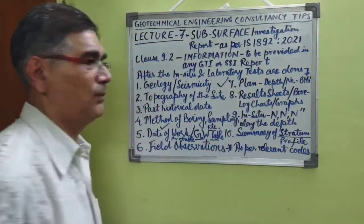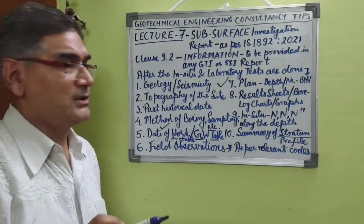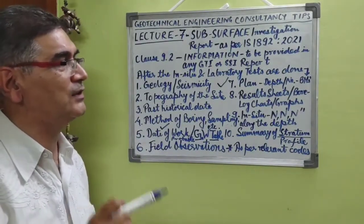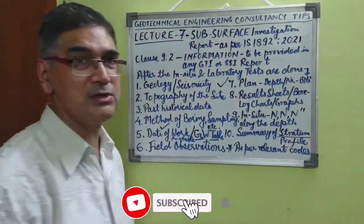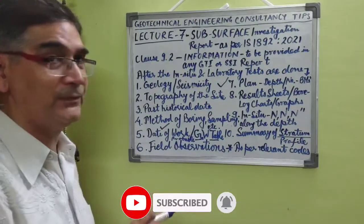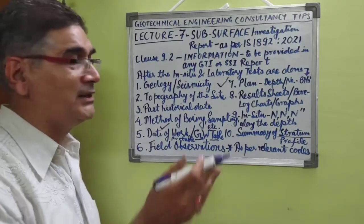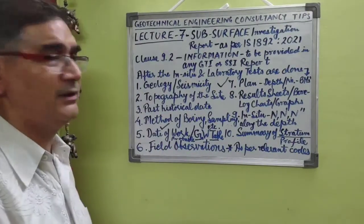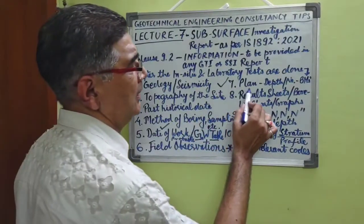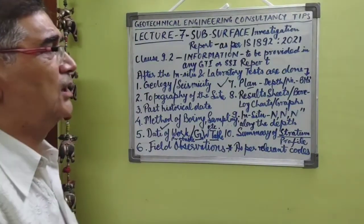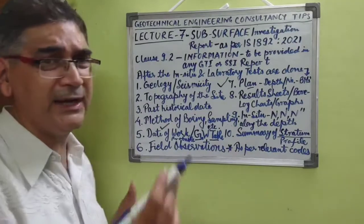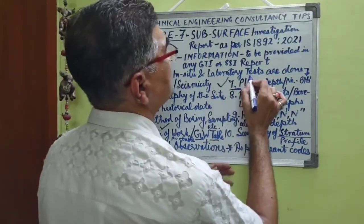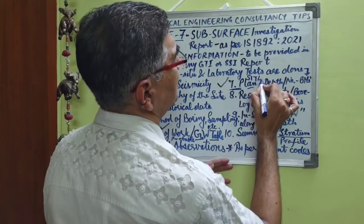Point seven is also very important: our geotechnical investigation report must enclose a site plan on which we mention the number and depth of boreholes, their location, and the distance between the boreholes. It should also show anything nearby — any major structure at the side of the site, any electric pole, any well, or any dilapidated building — everything should be clearly depicted on the site plan, which must necessarily form part of the report.